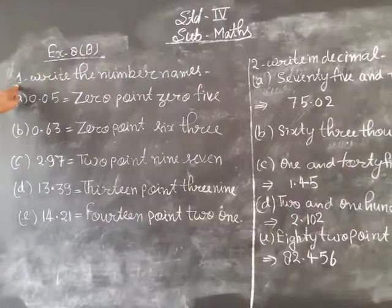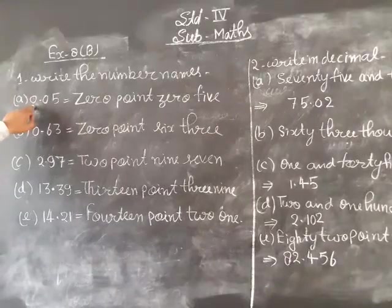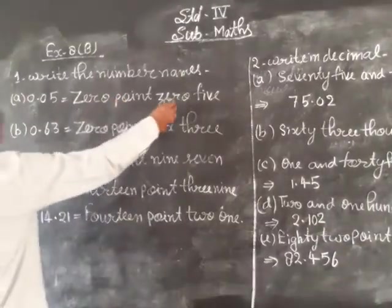Question number 1. Write the numbers in names. Part number A: 0.05. So this is zero point zero five.